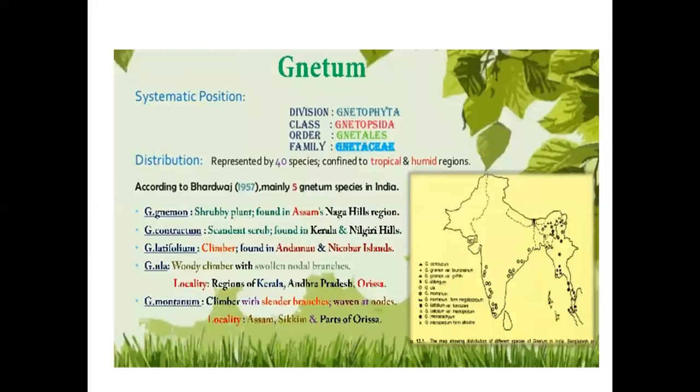Natum contractum, a succulent shrub, is found in Kerala and Nilgiri hills. Natum latifolium, a clamber, is found in Andaman and Nicobar Islands. Natum oolah, a woody clamber with swollen nodal branches, is found in Kerala, Andhra Pradesh, and Orissa. Natum monastrum, a clamber with slender branches woven at nodes, is found in Assam, Sikkim, and parts of Orissa.